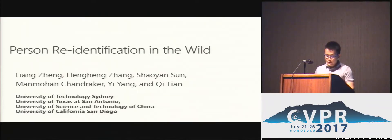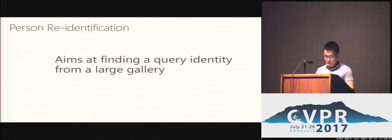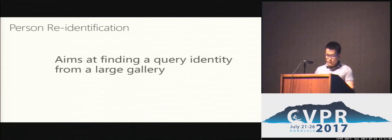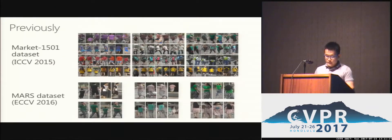First, let me briefly introduce the task of person re-ID. In this task, we aim at finding a query person from a large gallery, wishing to rank the true match on top ranks of the returned rank list. Previously, we have released two large-scale re-ID datasets, which are Market 1501 and Mars. They focus on image-based and video-based re-ID, respectively.